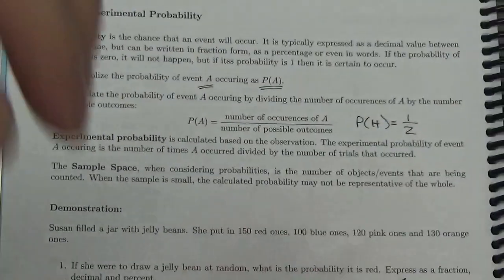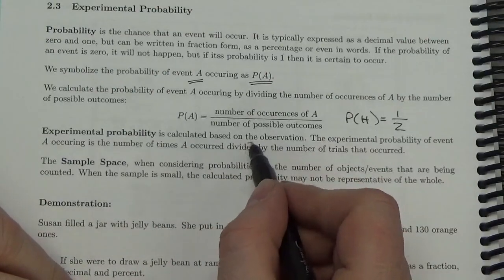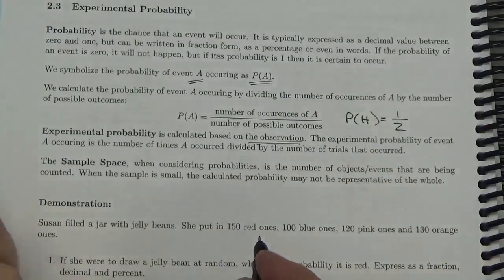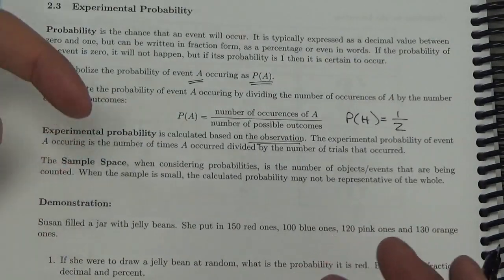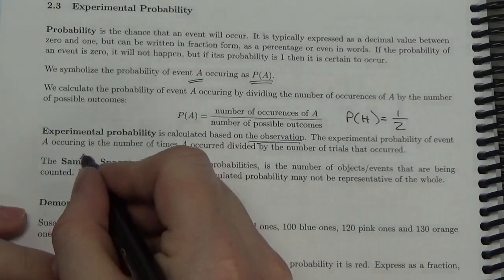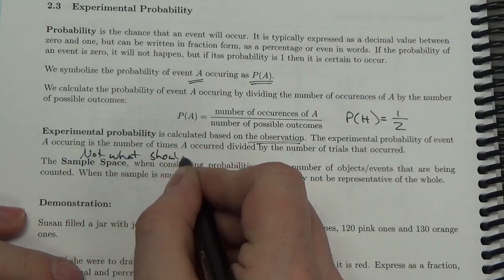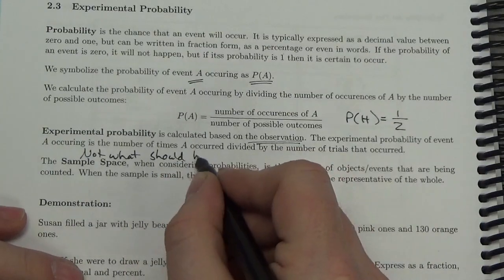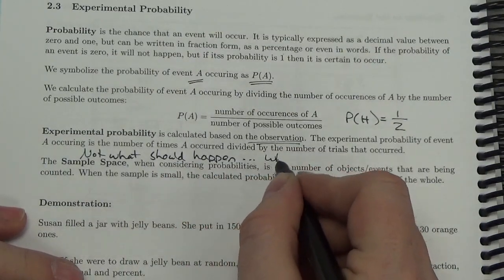Experimental probability is calculated based on observation. We're not really looking at what should happen — we're looking at what has happened. That's the best way to think about it: not what should happen, but what has happened.